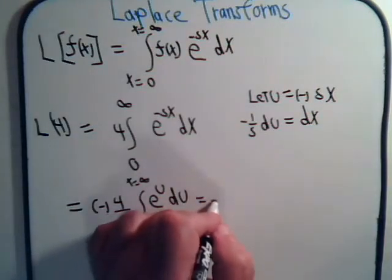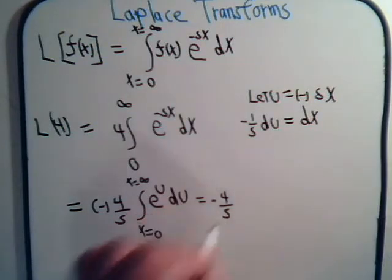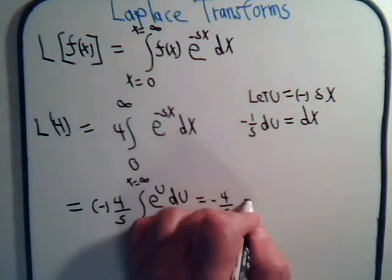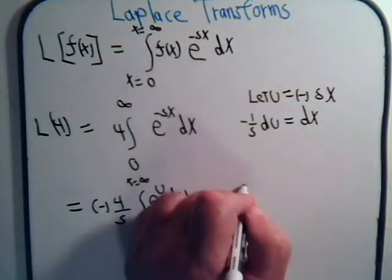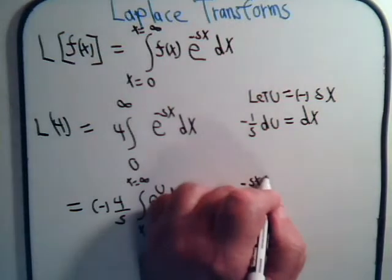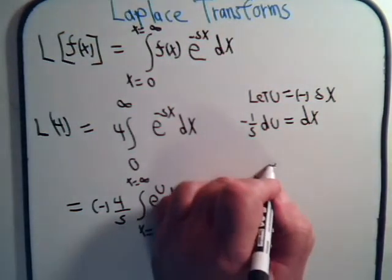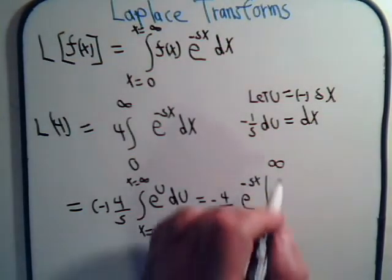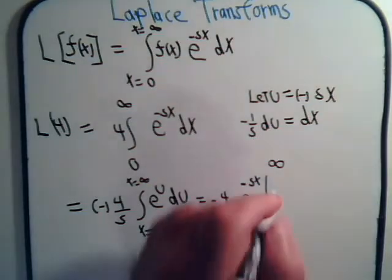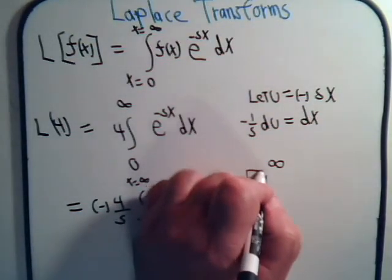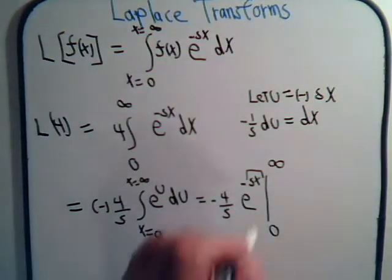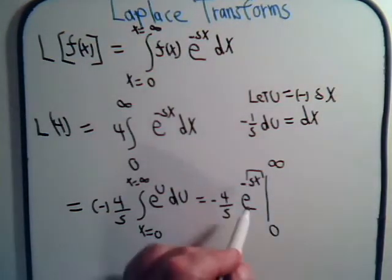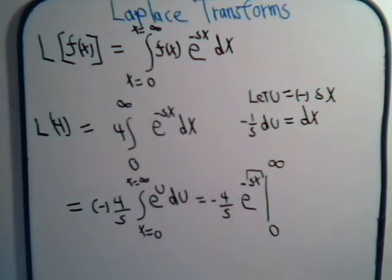This equals minus 4 over s times the integral of e to the u. And e to the u is e to the minus sx, where x goes from 0 to infinity. This is the part that might give us a problem. If s is positive, then we're taking e to the minus infinity, which is 1 over e to the infinity, which equals 0.